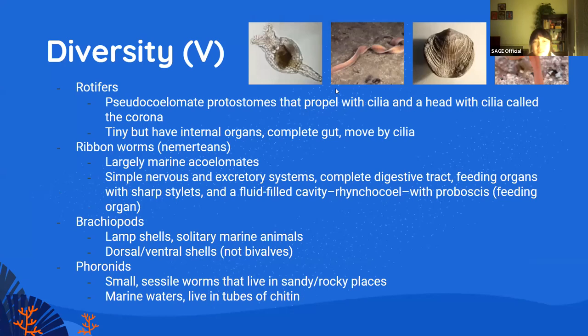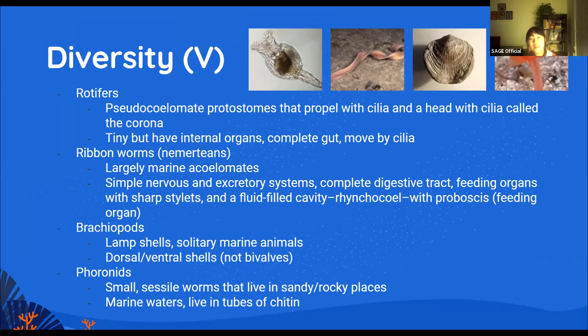Rotifers are another protostome. They have a pseudogut, and their unique feature is something called a corona — a crown of cilia that propels them. They have internal organs even though they're tiny. Ribbon worms look like ribbons; they are marine worms with very simple systems.